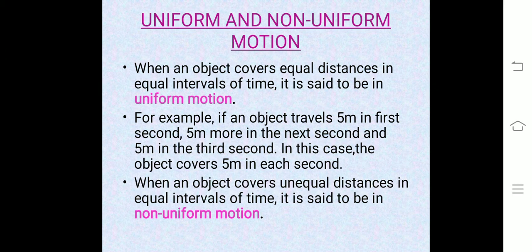Uniform and non-uniform motion. When an object covers equal distances in equal intervals of time, it is said to be in uniform motion. For example, if an object travels 5 meters in the first second, 5 meters more in the next second, and another 5 meters in the third second — as the object covers equal distances in each second — it is said to be in uniform motion.